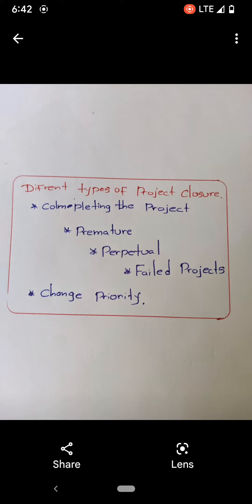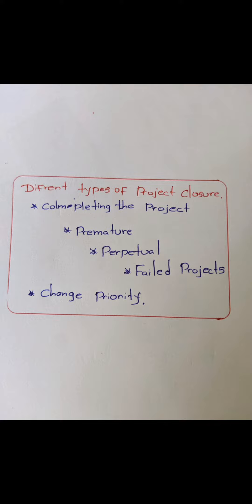Perpetual means it's never ending — it keeps on going and going — and it's one type of project closure. The other one is a failed project, that means the project has failed and it has come to a closure.